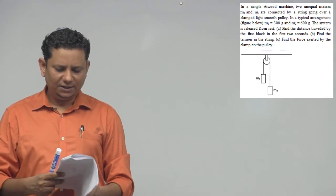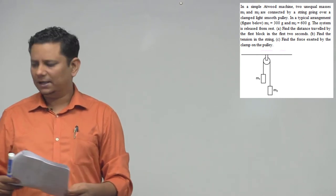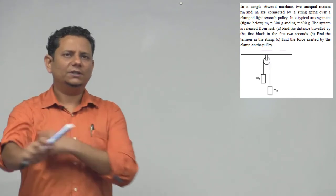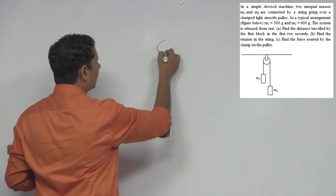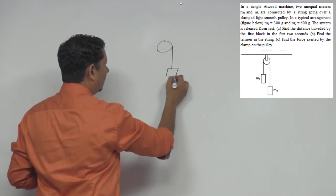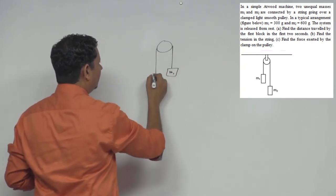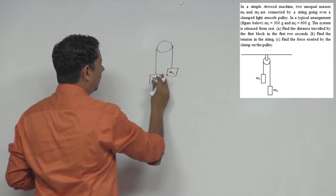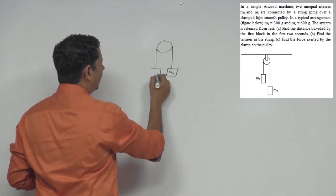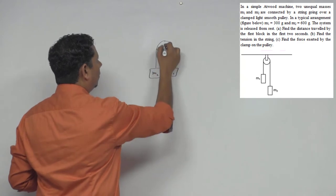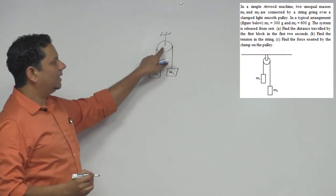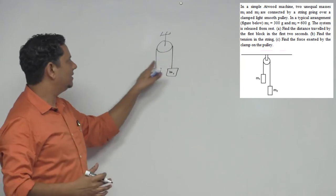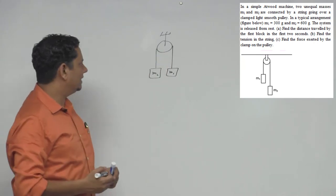Find tension in the string and force exerted by clamp on the pulley. Now again, Atwood machine, simple problem. So this is our scenario - you have mass m1 and mass m2, and both are at the same level.